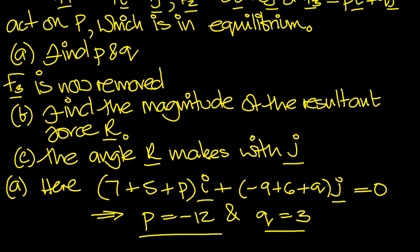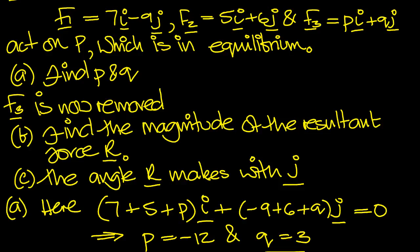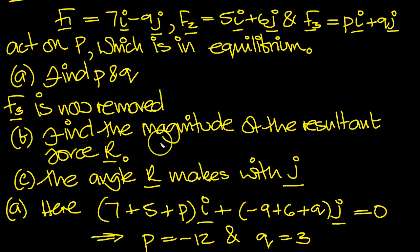OK, that's part A. F3 is now removed. Find the magnitude of the resultant force R. Well, since I've got it here, I'll just use the digital pen, and I'll insert part B in here.